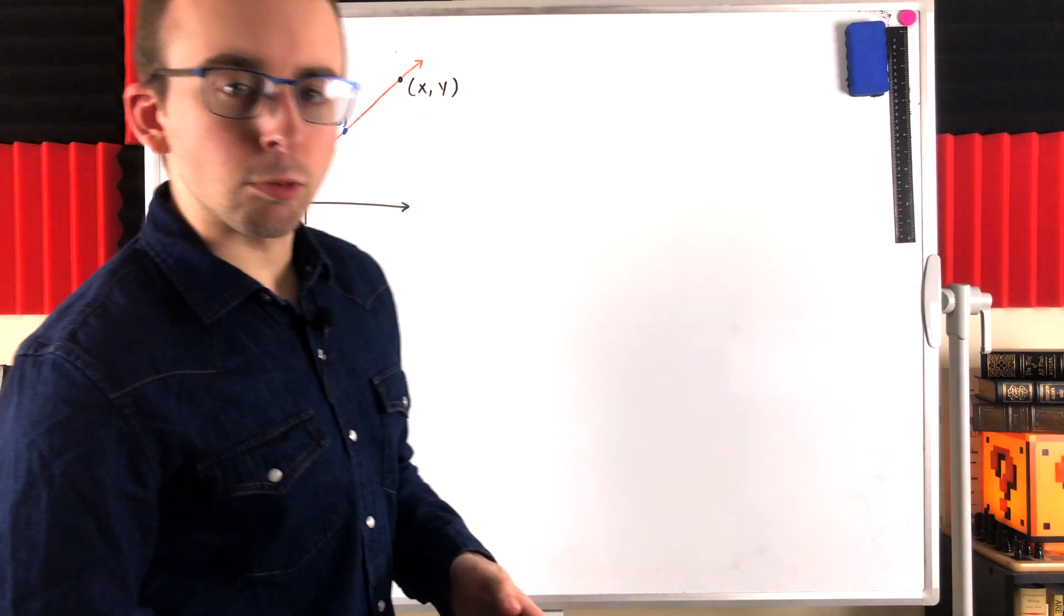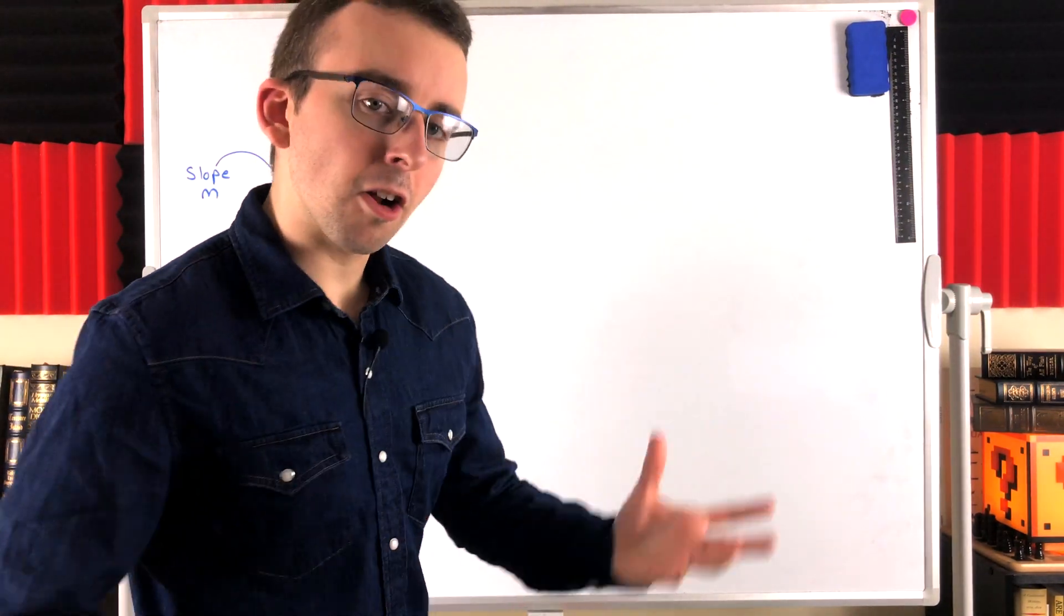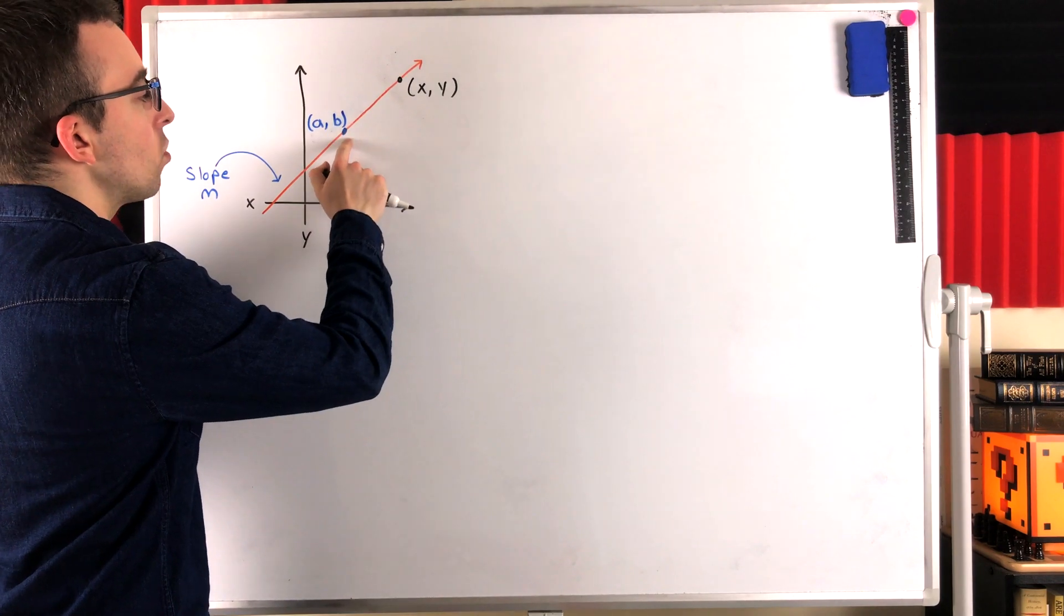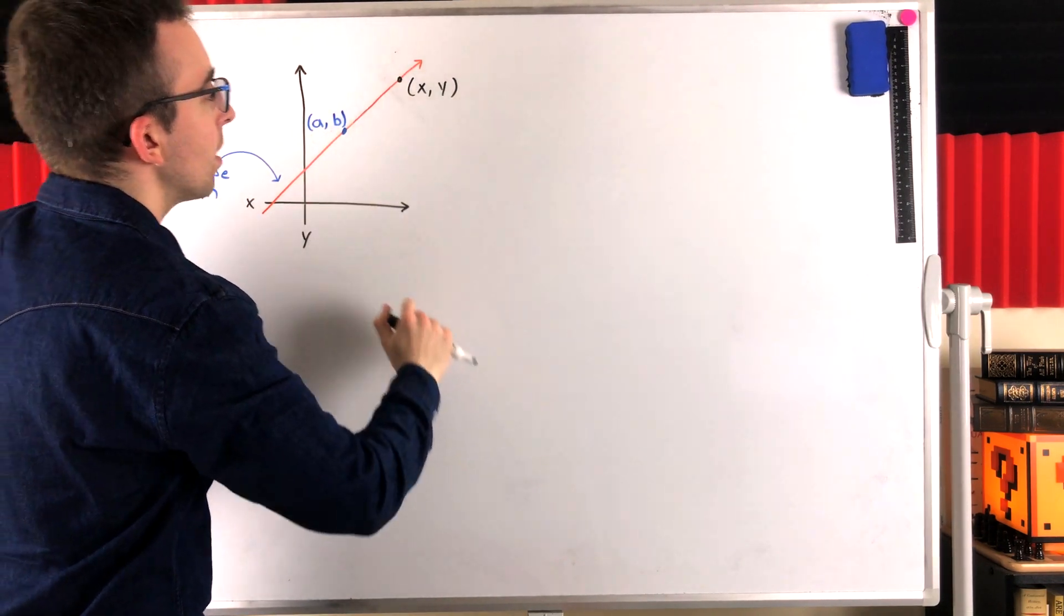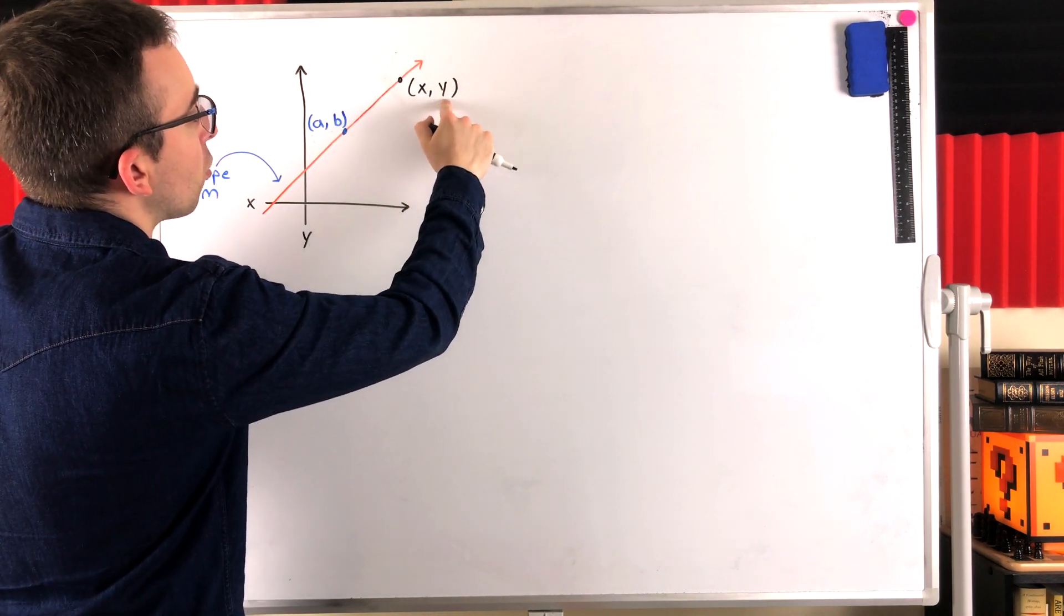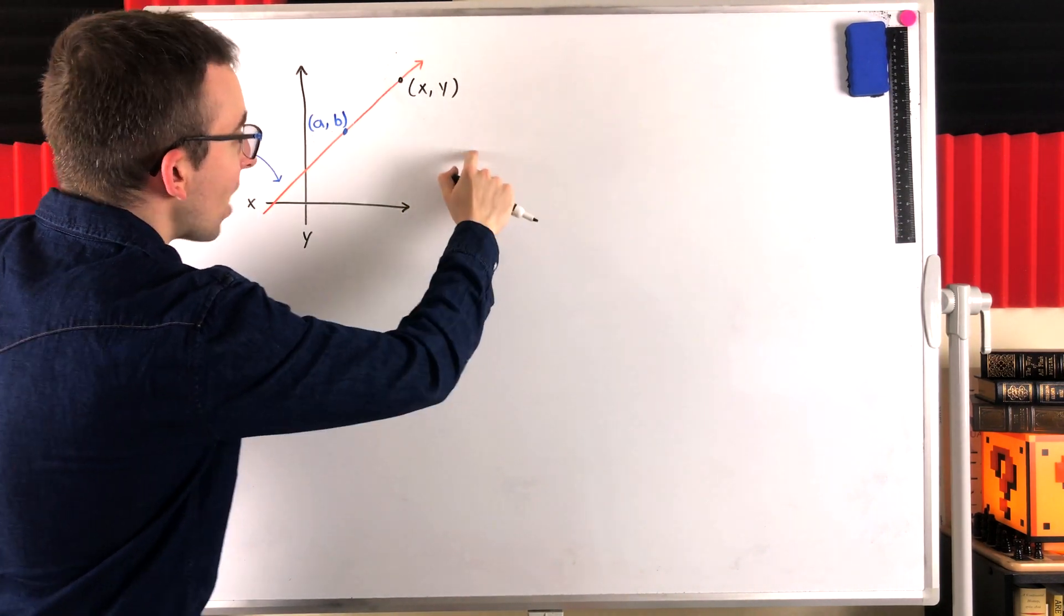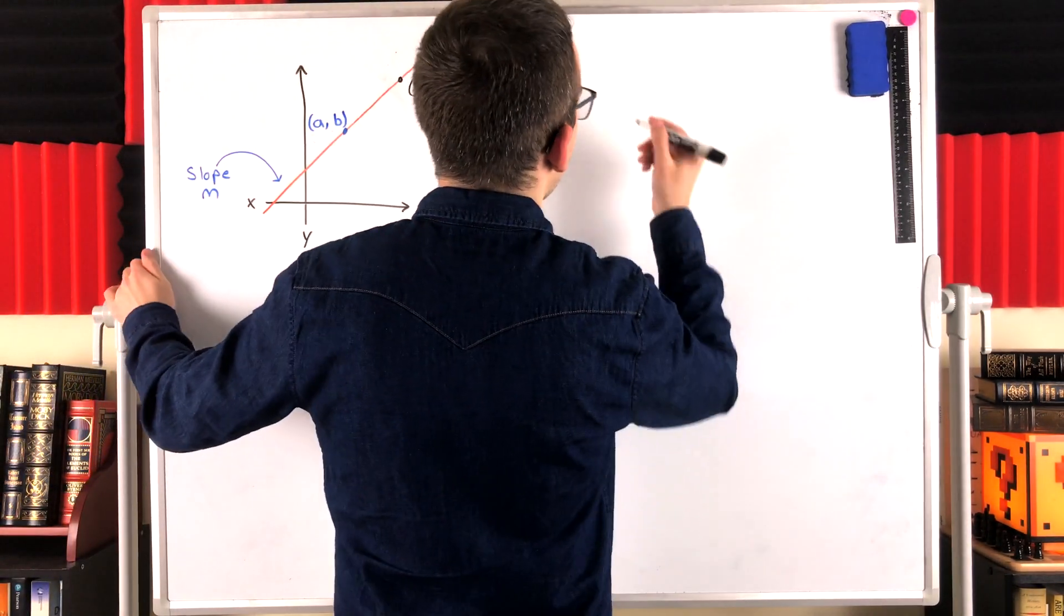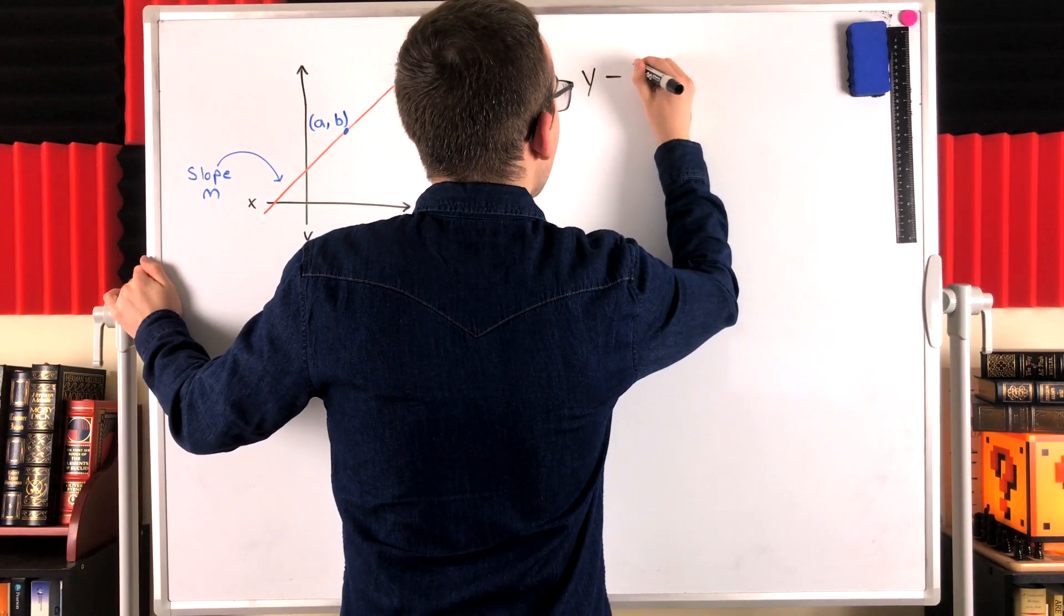Remember that slope is rise over run. So, let's start with the rise. What is the rise or the vertical change from this point to this point? Well, we start at a vertical position of B. We end up at a vertical position of Y. So, the total change is Y minus B. That's the difference between the vertical positions, Y minus B.